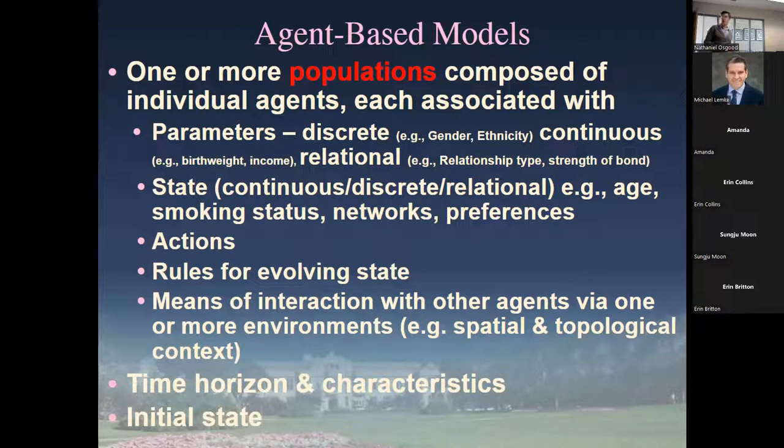Something that changes we call aspects of state. Parameters are these fixed characteristics. Depending on the model, some you might consider fixed, like income or gender, which might actually change in other models. But things like ethnicity or someone's birth weight are fixed.